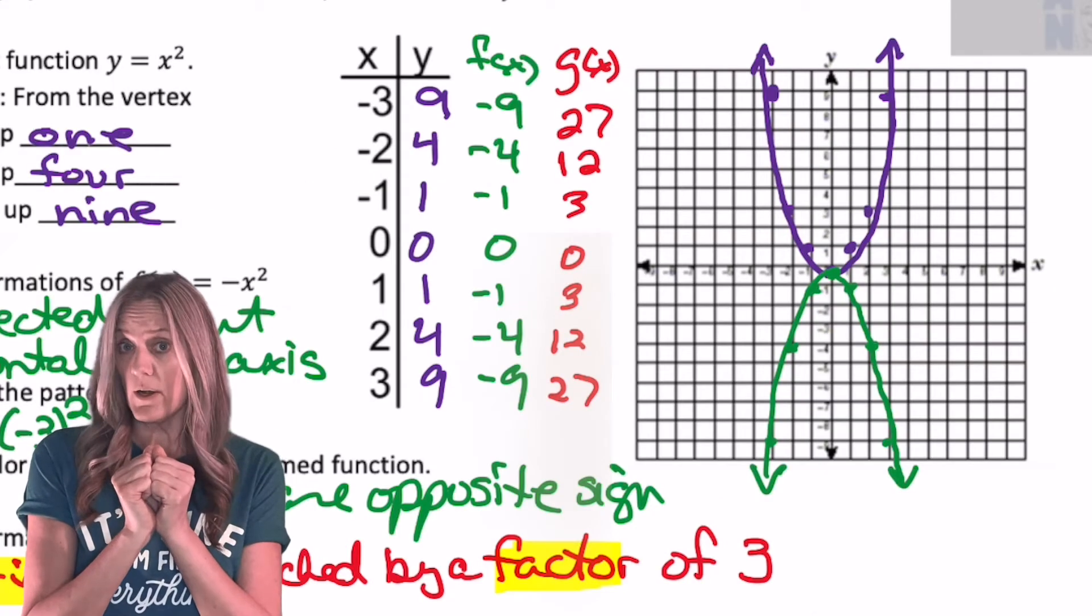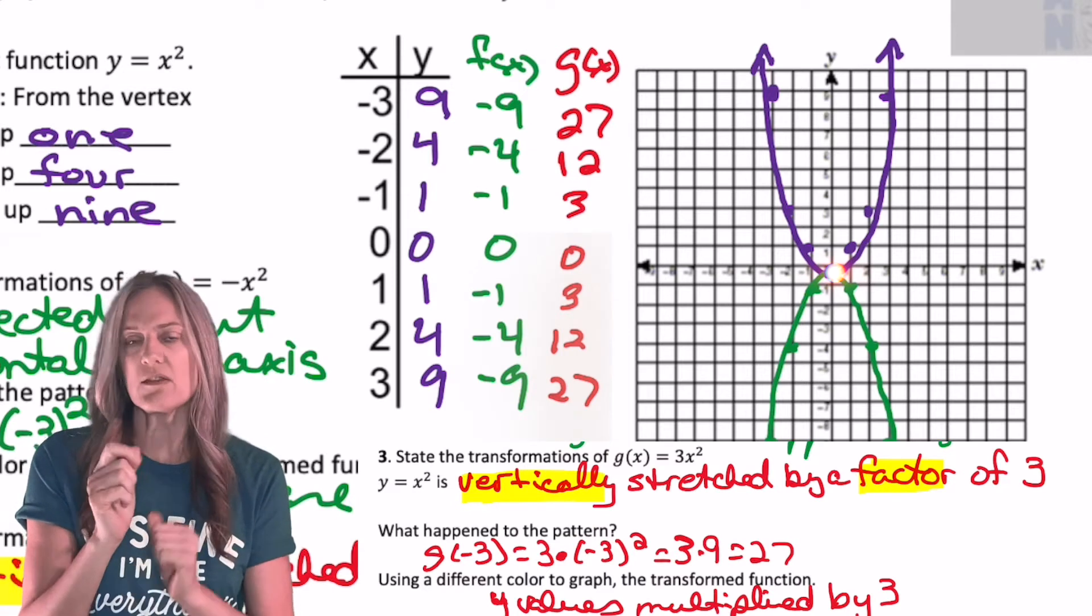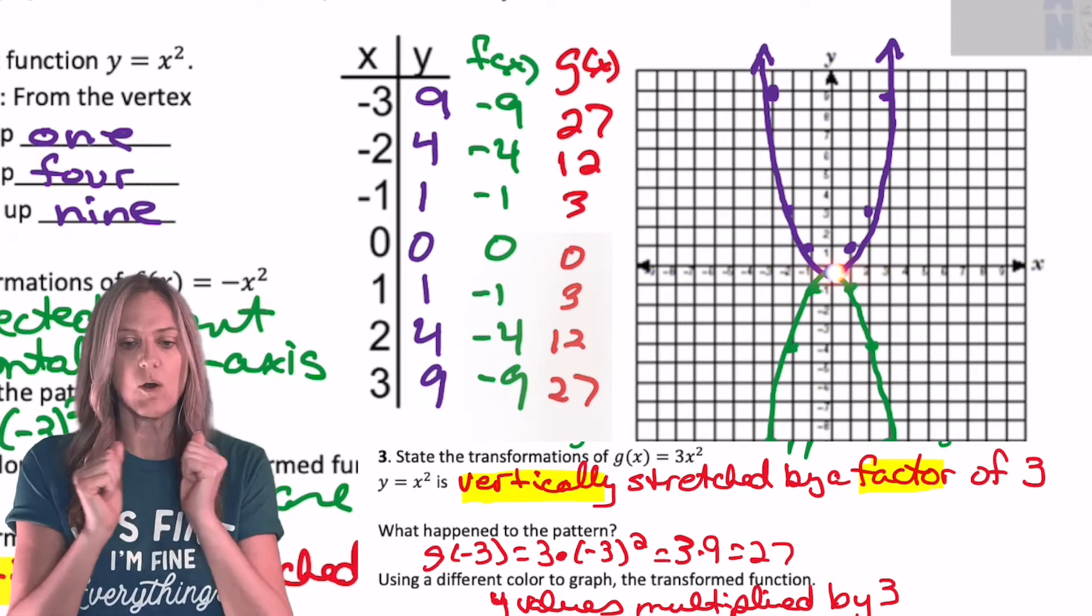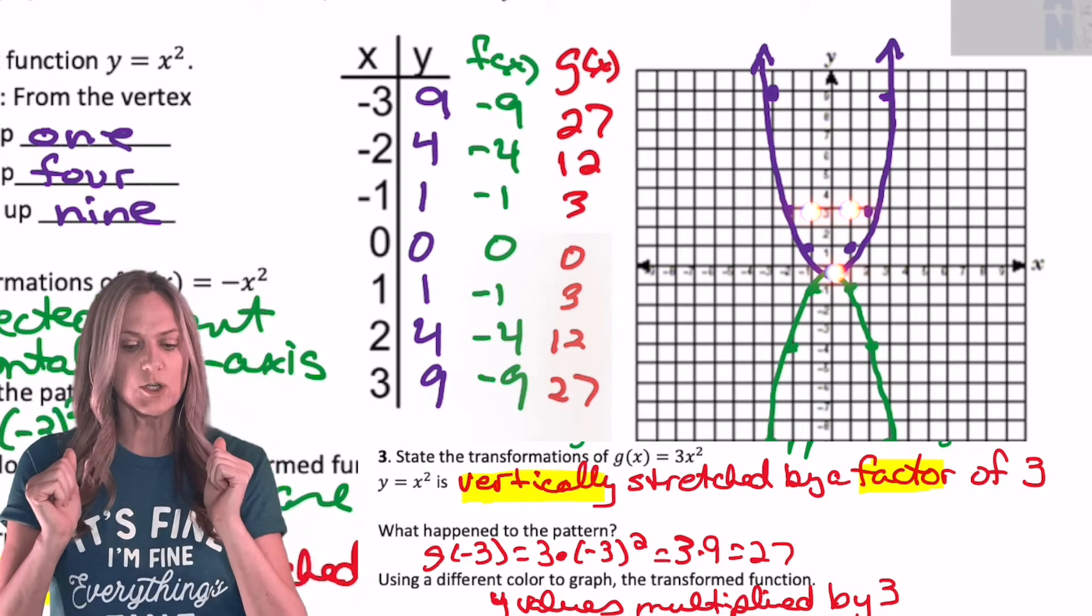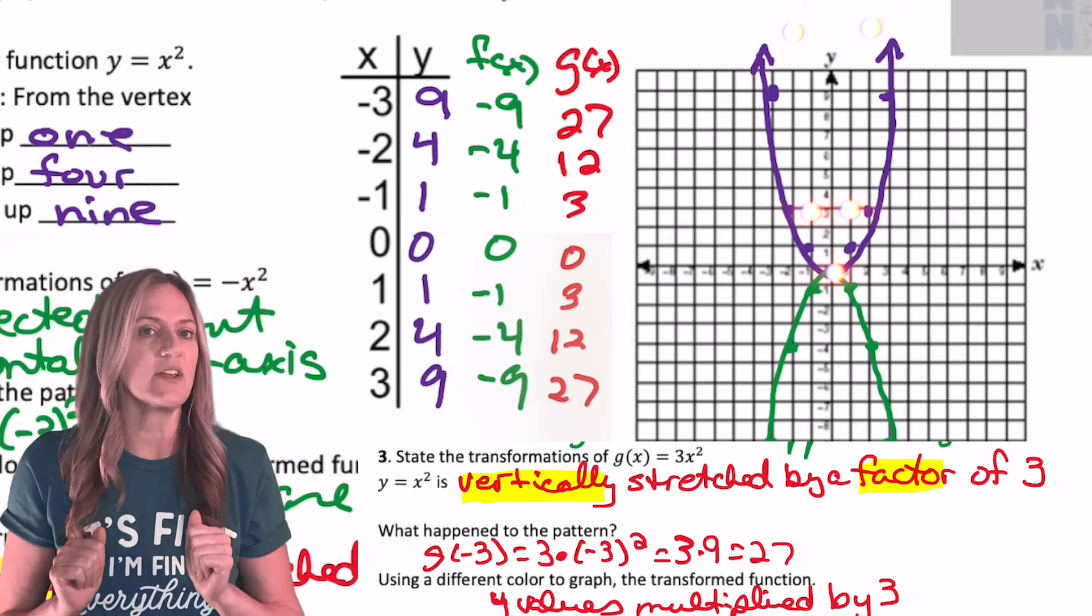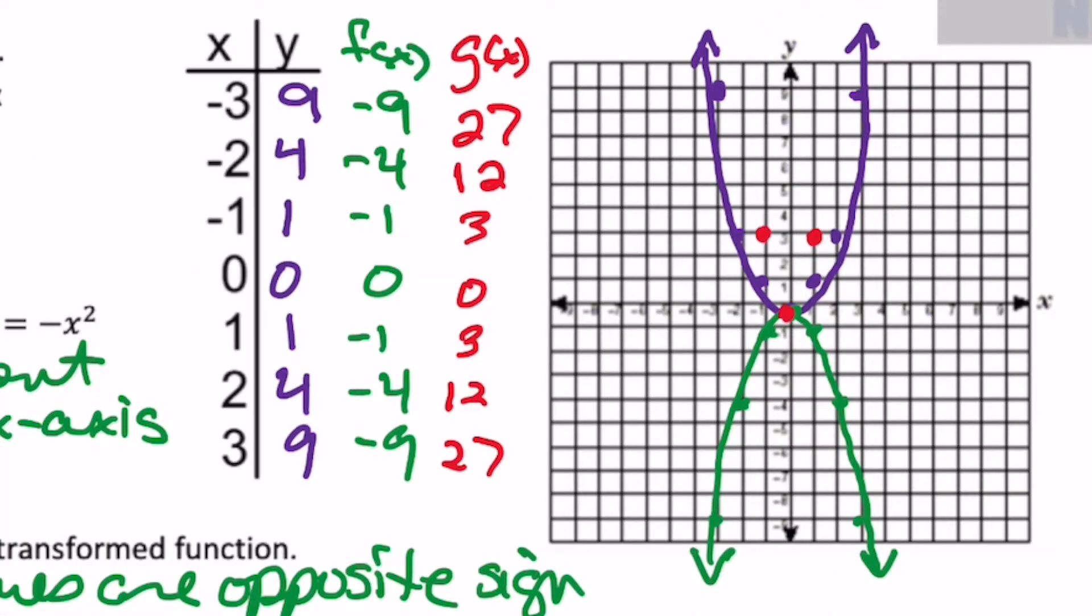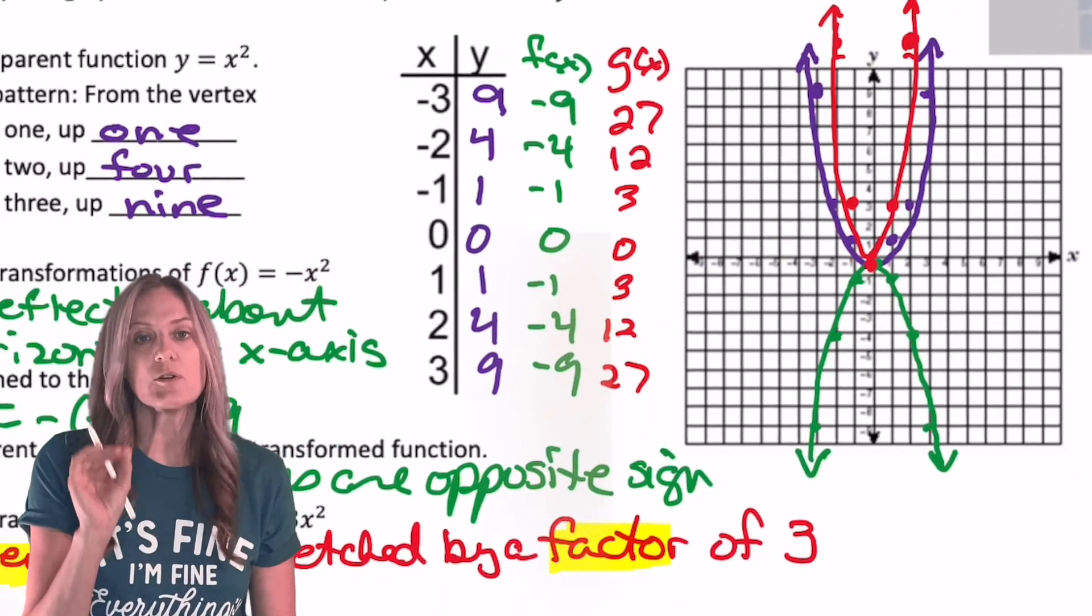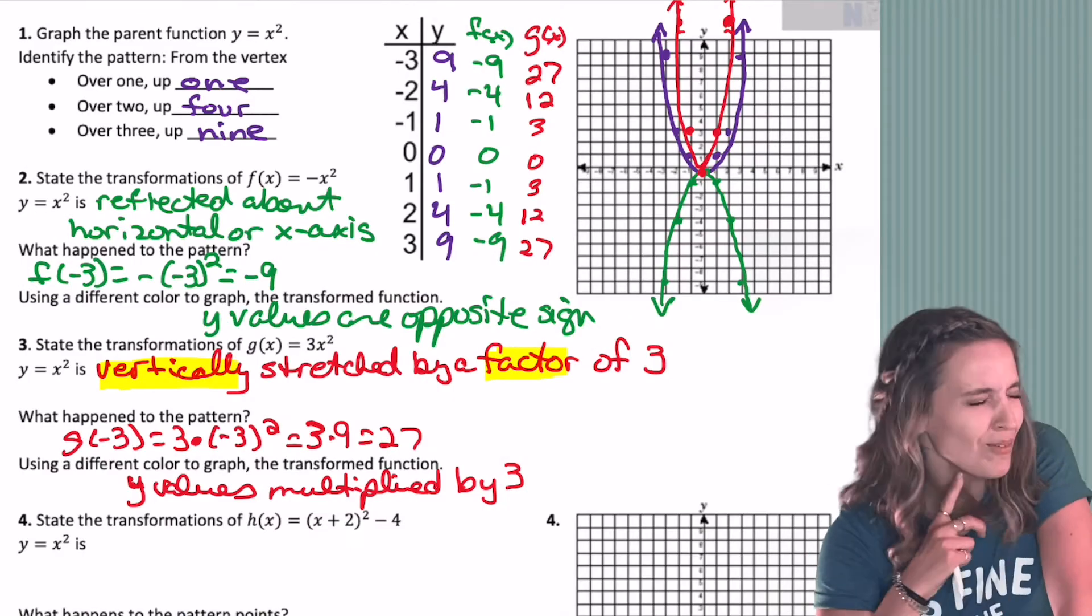So now think about how we can graph this. We go back to our vertex, 0, 0, and then we're going to go over 1, up 1. Wait a second. Nope, because it's vertically stretched by 3. So the y values are multiplied. So over 1, up 1, but 1 times 3 is 3. So over 1, up 3. Over 2, normally 4, but 4 times 3 is 12. So I'm going to go over 2, up 12. And then of course, if I went over 3, up 9, 9 times 3, I'd go up 27. That's going to go off my graph. So I'm just going to graph the first two sets of points over. Once again, does it look like an absolute value graph? If it does, erase it now. You have to get a curve in there.